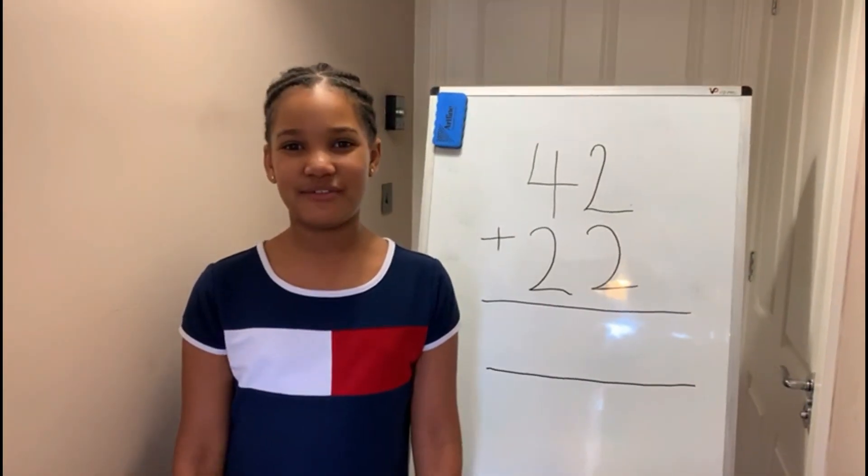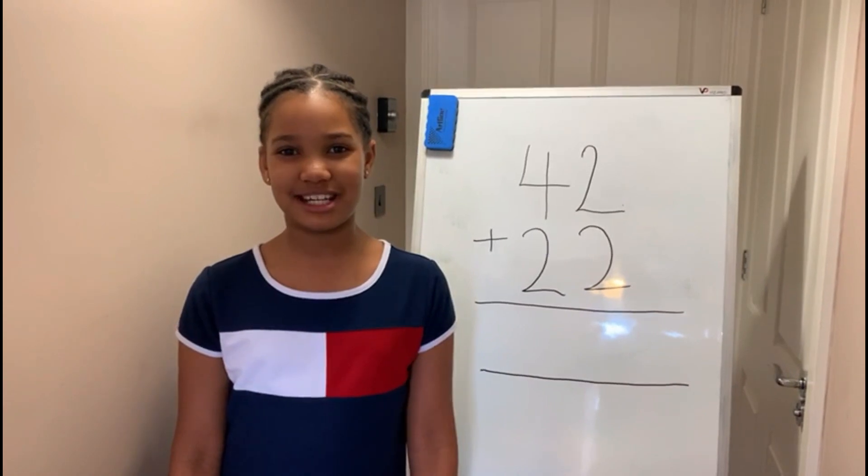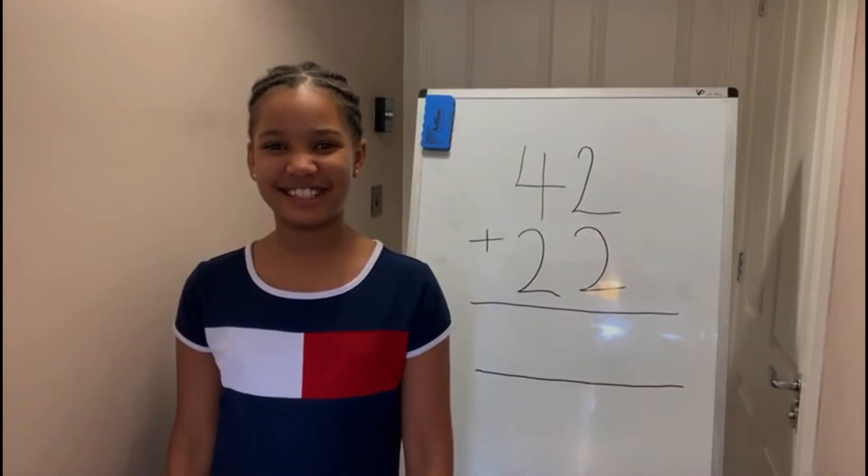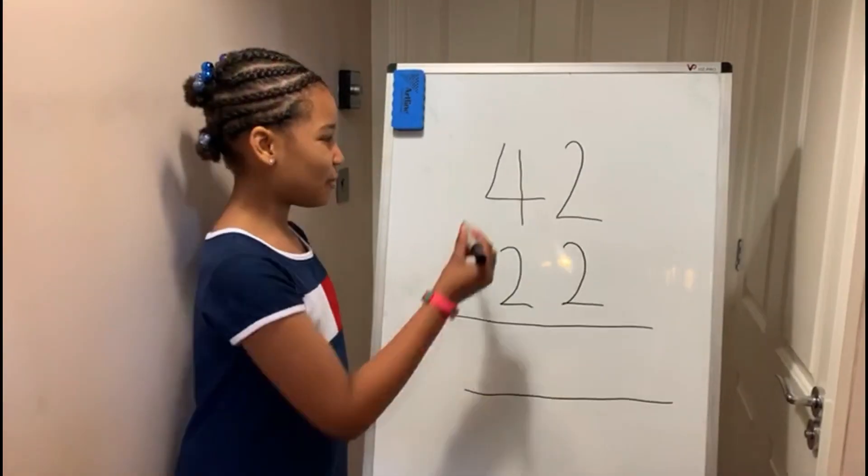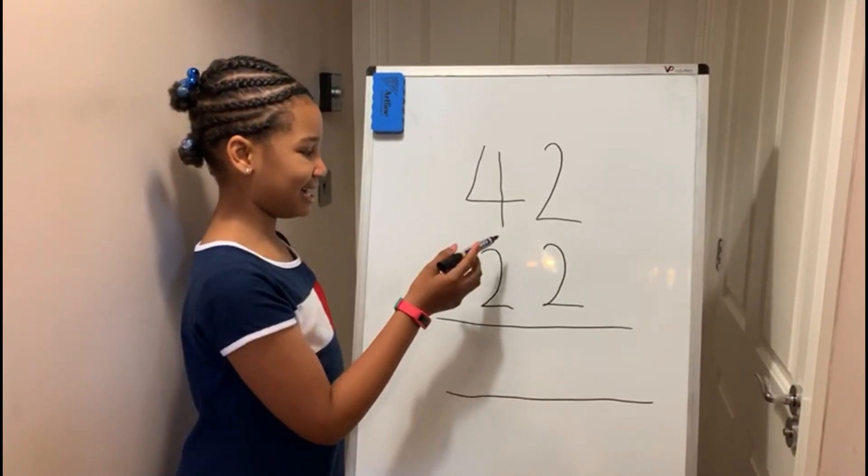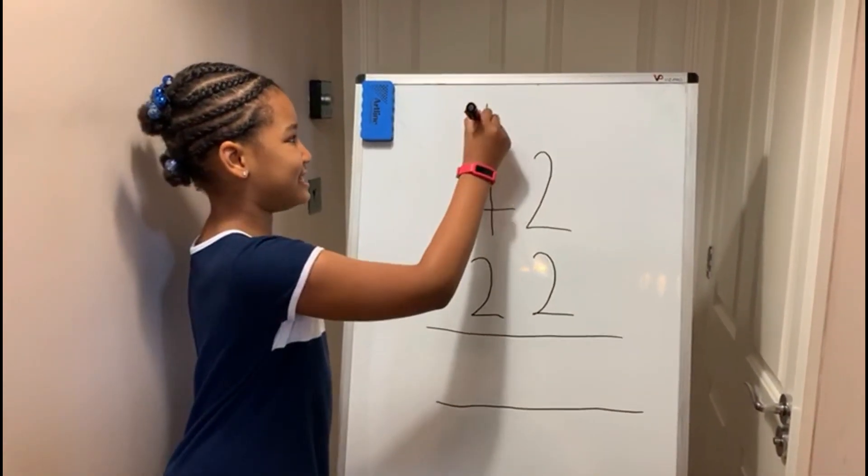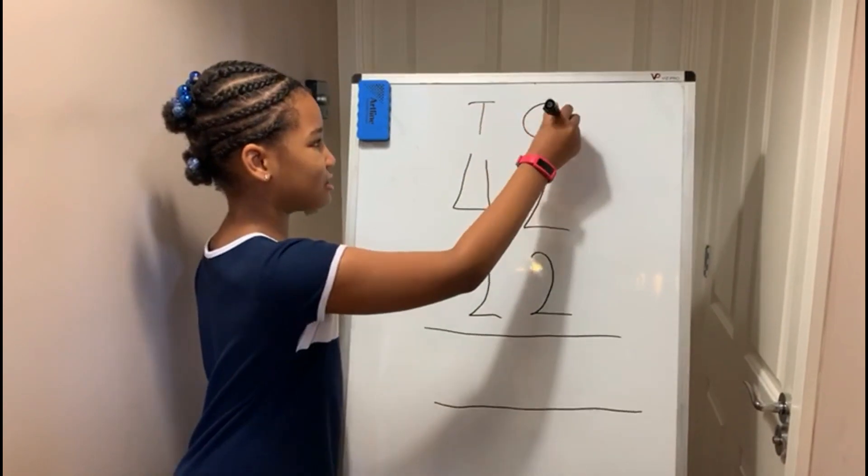First let's start with two-digit number addition to get us warmed up. Here we have 42 add 22. This is a tens column and this is a ones column.